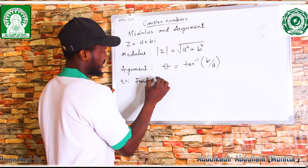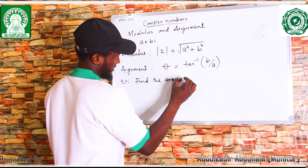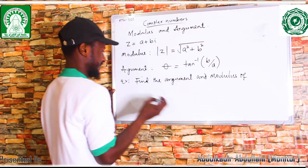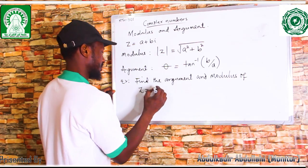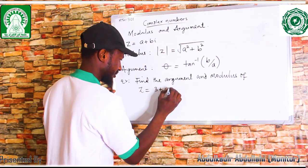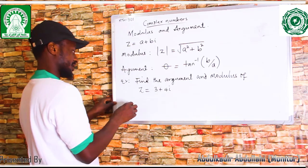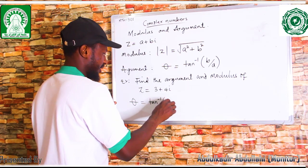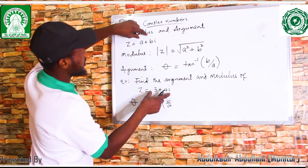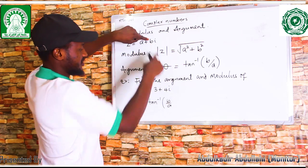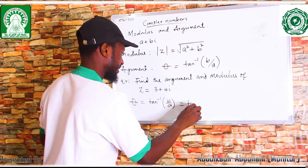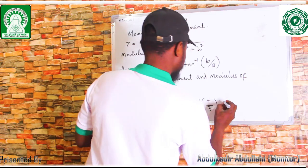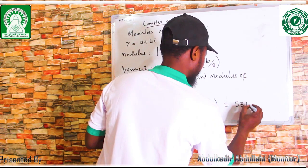Now, example: find the argument and modulus of z = 3 + 4i. Let's start with the argument. The argument, which is theta, is equal to tan inverse of b over a. The real number is a and the imaginary number is b. So we are going to have tan inverse of 4 over 3.